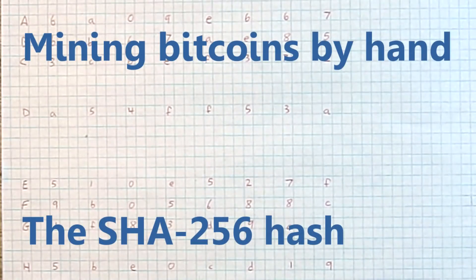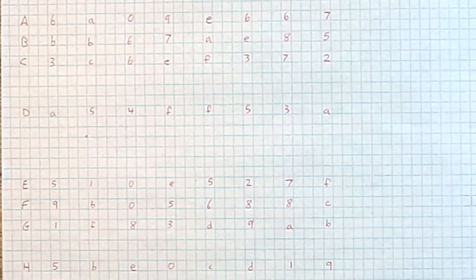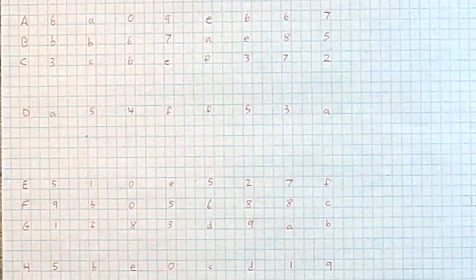To do one round of the SHA-256, we start with eight inputs: A, B, C, D, E, F, G, H. For the first round, these are constants provided by the NSA, no joke.